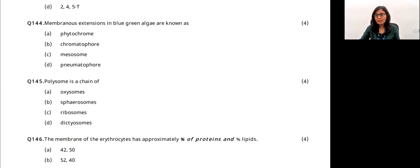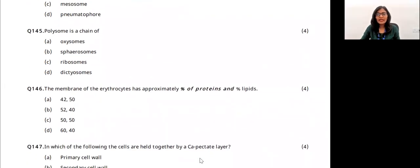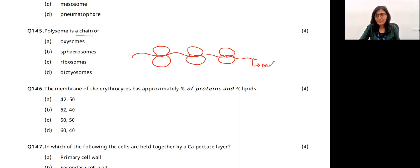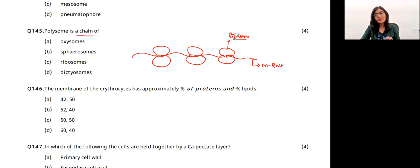Polysomes: poly means many, somes means ribosomes. In protein synthesis, mRNA is present and ribosomes (large and small subunits) bind to it. If many ribosomes are bound to one mRNA strand simultaneously, they are called polysomes. Polysomes are related to ribosomes. The answer is option B.